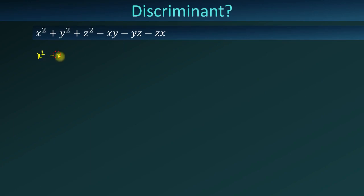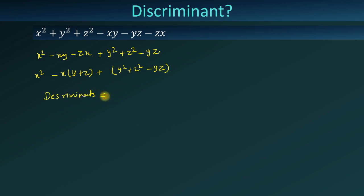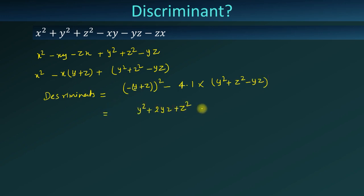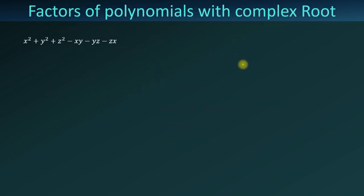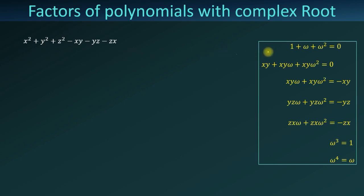We have found the discriminant of this expression, which is equal to negative 3 times (y plus z) whole squared. Of course, the discriminant is less than zero, and we already know that when the discriminant is less than zero, the polynomial will not have any real roots.